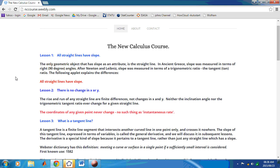The only geometric object that has slope or gradient as an attribute is the straight line. In ancient Greece the slope was measured in terms of right angles or what you think of today as 90 degree angles or pi over 2 radians. After Newton and Leibniz, slope was measured in terms of a trigonometric ratio, the tangent ratio.